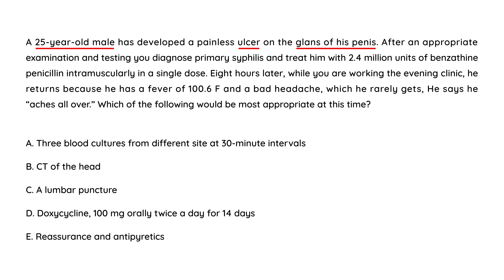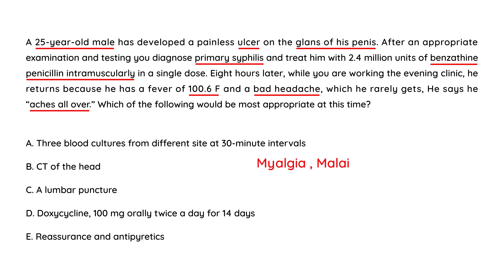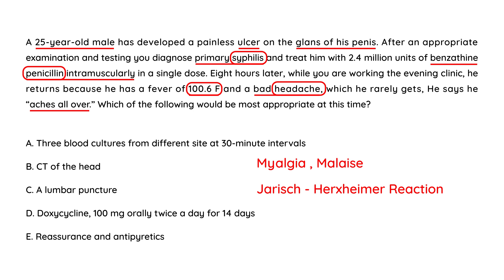Clinical vignette 3: A 25-year-old male develops a painless ulcer on the glans of his penis — primary syphilis — and is treated with 2.4 million units of benzathine penicillin intramuscularly. Eight hours later he returns with fever of 100.6, a bad headache, and diffuse aching. This is the Jarisch-Herxheimer reaction. It resolves in about 24 hours, so the answer is reassurance and antipyretics.